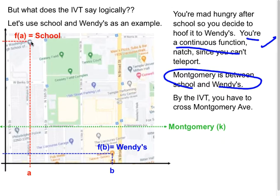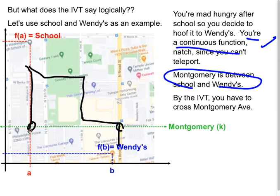So let's go ahead and show that. So maybe you walk out of the schoolyard and you cut across the track and you walk down 15th, and maybe you even walk along Montgomery, but oh, look, you got to cross. You had to cross to get to Wendy's.